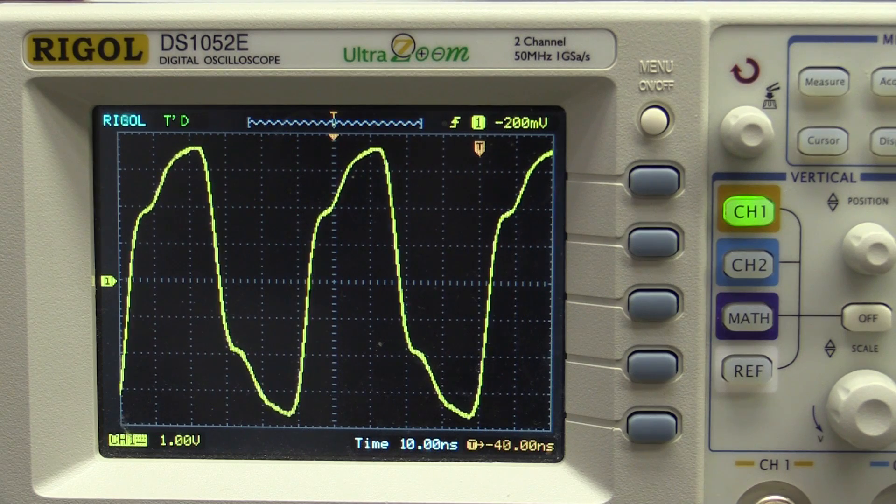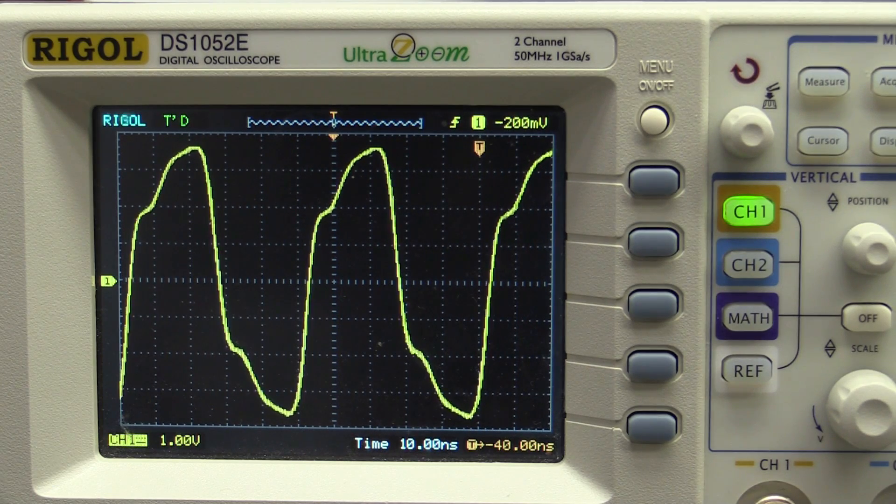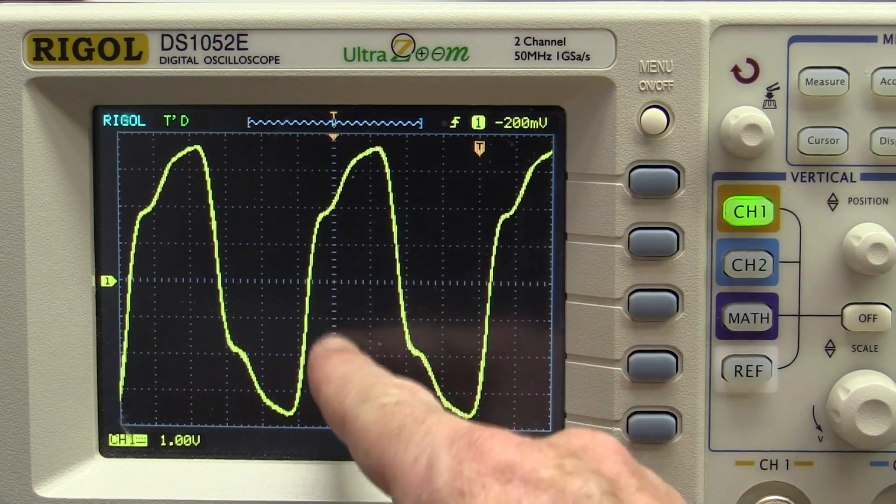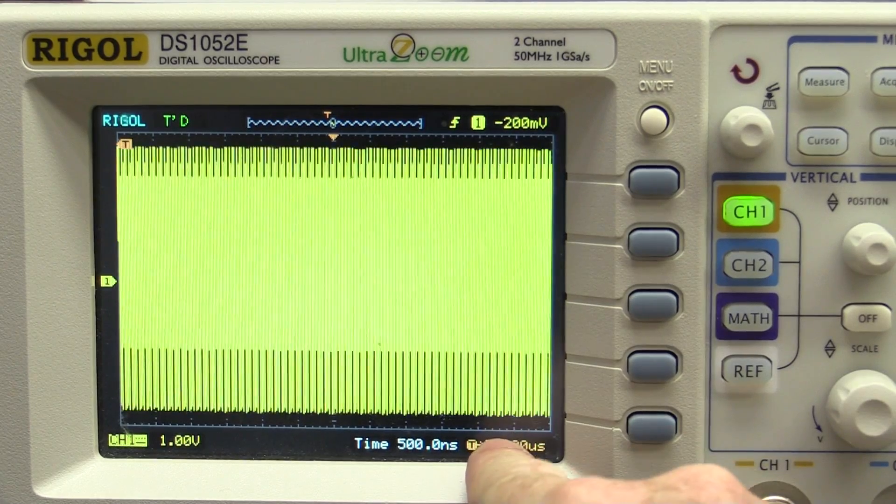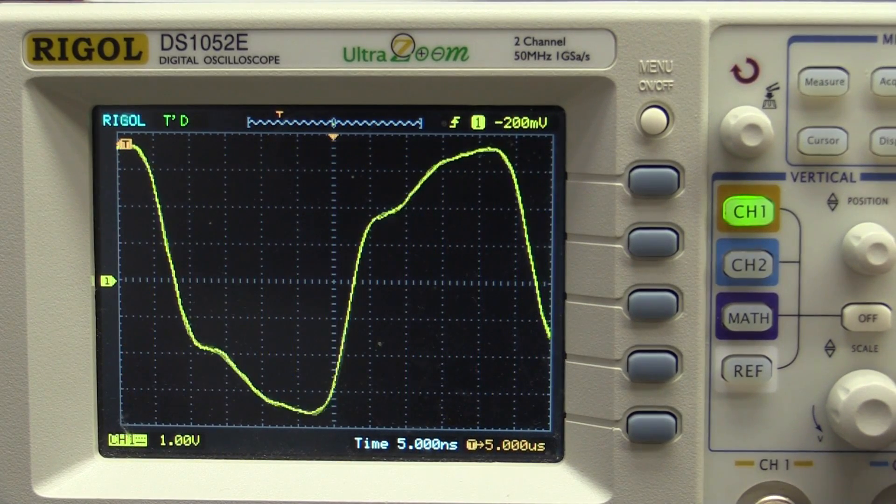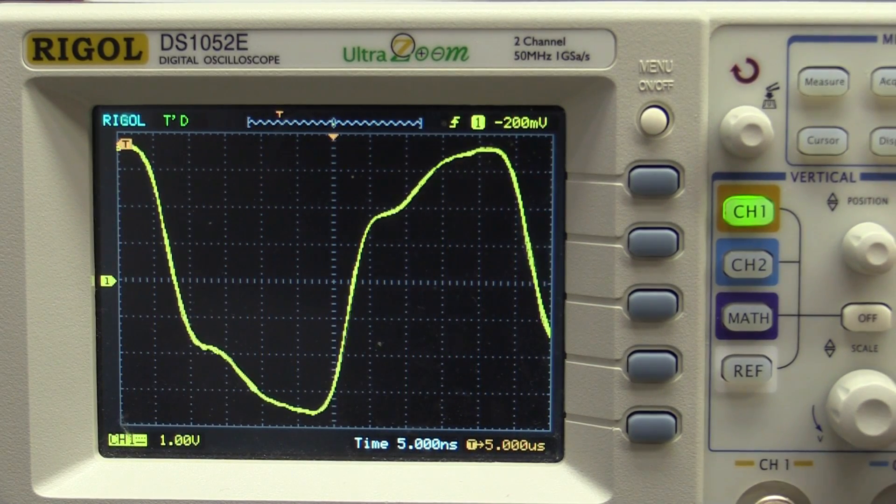And does the venerable old Rigol DS-1052E do it? Well, that's at no offset, and look, it looks pretty clean, no problems whatsoever. And if we go out by exactly 5 microseconds there, nope, no jitter at all.